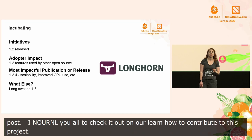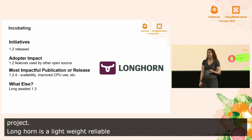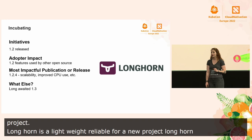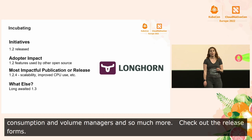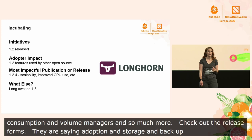Longhorn is a lightweight, reliable, and powerful distributed block storage system for Kubernetes. A new incubating project, Longhorn released version 1.2.4, which improves scalability on volume number, high CPU consumption by volume instance managers, and much more. Check out the release notes on their GitHub repo. They're seeing adoption by other open source projects as storage backend using backing image functions, volume cloning, backup, and restore, and many other features introduced in version 1.2.